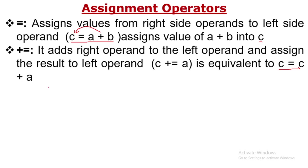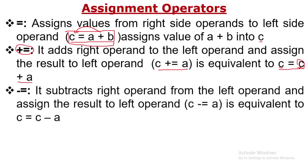You can write such expressions in short form using += only when the variable is common on both sides; otherwise it will not work. Similarly, the minus-equal-to (-=) operator works the same way — you can write c -= a as a short form of c = c - a.